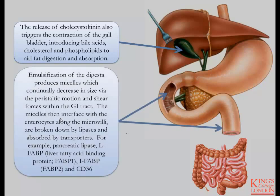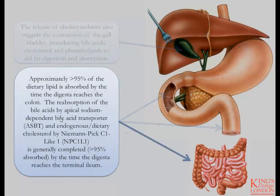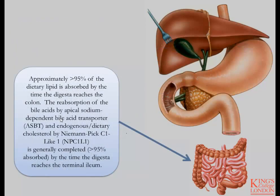The emulsification of the digesta produces micelles, which continually decrease in size via the peristaltic motion and the shear forces within the GI tract. The micelles then interface with the enterocytes along the microvilli and are broken down by lipases and absorbed by transporters. For example, pancreatic lipase is a major lipase found in the digestion process. L-FABP, or liver fatty acid binding protein 1, and I-FABP as well as CD36 are all fatty acid transporters involved in moving fatty acids from the lumen of the gastrointestinal tract into the enterocytes. Approximately 95% of the dietary lipid will be absorbed by the time the digesta reaches the colon. Cholesterol and bile acids will also be reabsorbed via specific transporters in the small intestine, generally completed by the time the digesta reaches the terminal ileum.